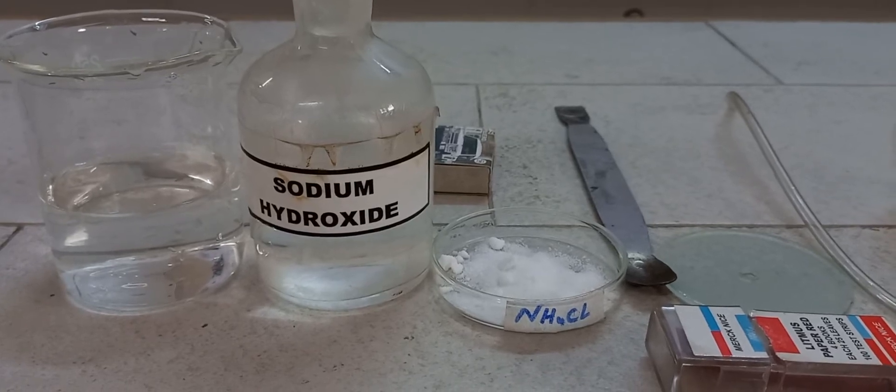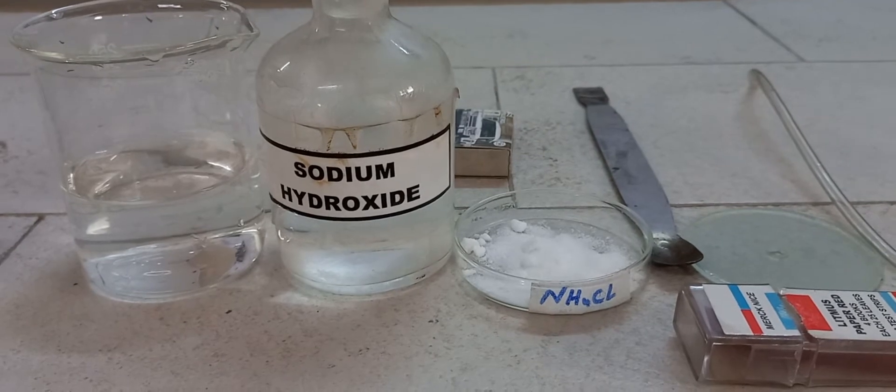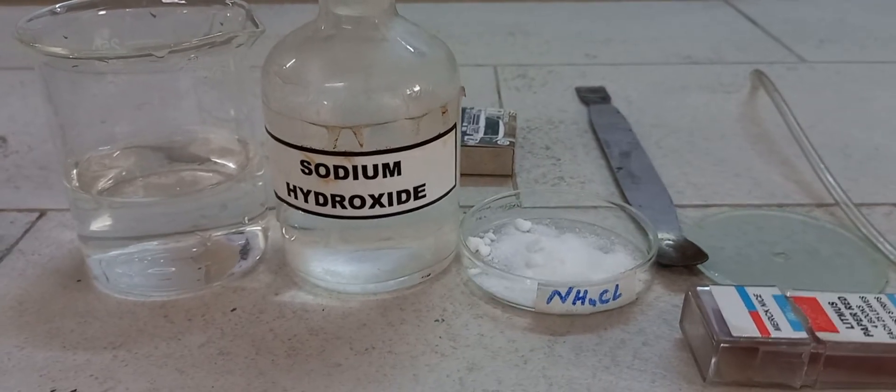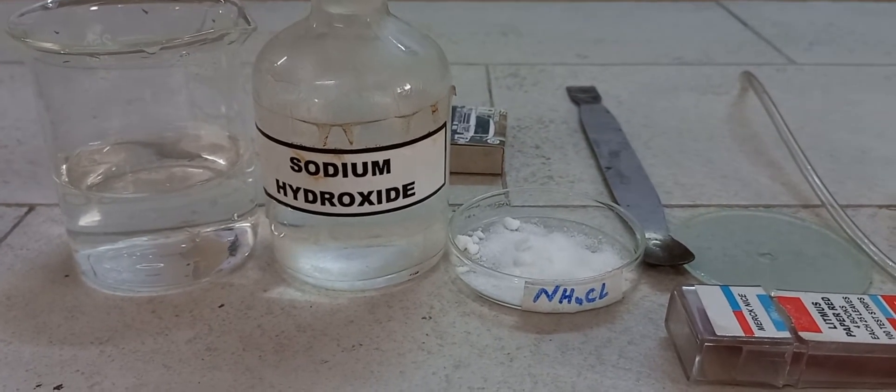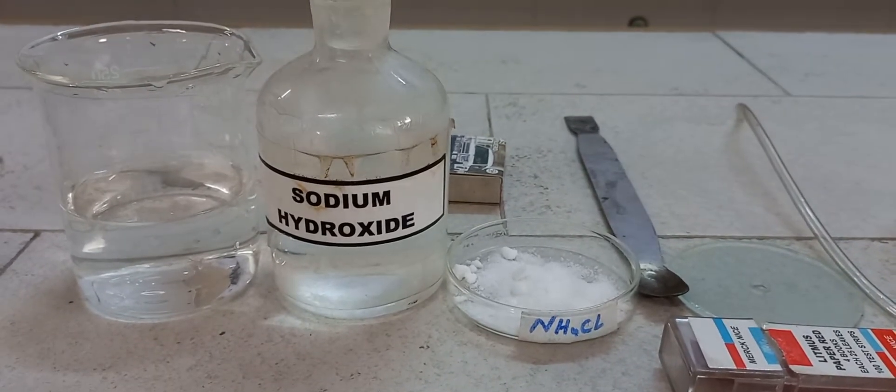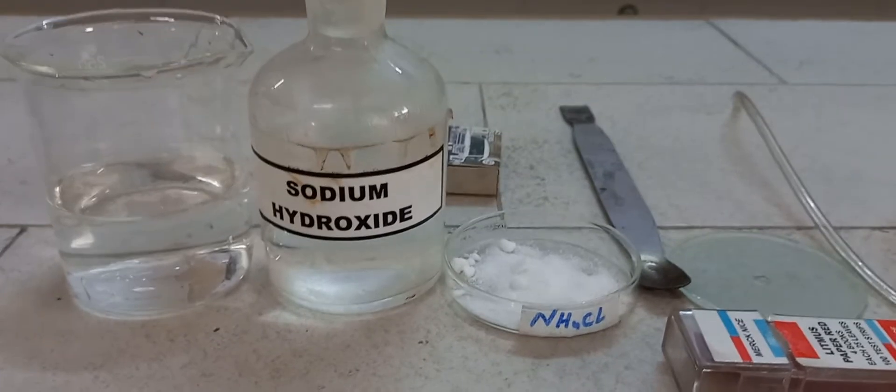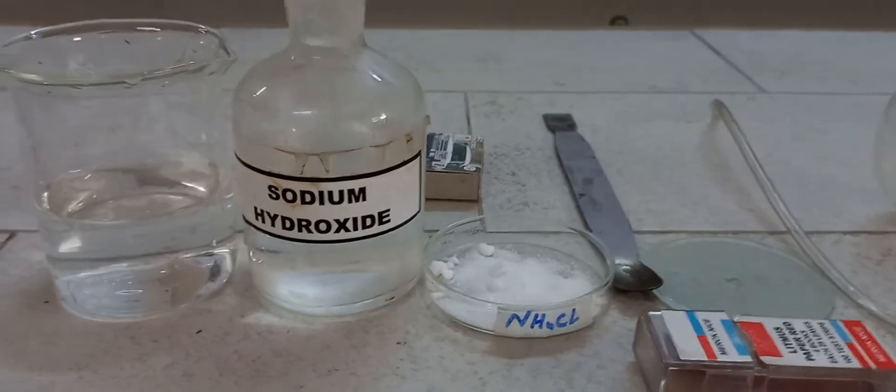In today's video we are going to see the preparation of ammonia gas. Ammonia gas is the only gas which is alkaline in nature. Alkaline gases or alkali turn the moist red litmus paper to blue. First we'll be doing the preparation of ammonia gas and then we will be identifying the ammonia gas.